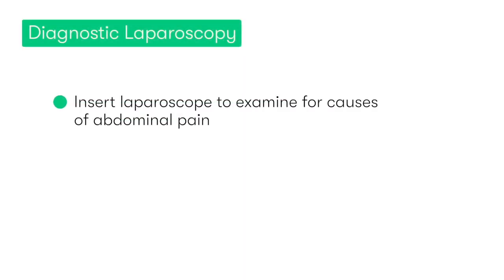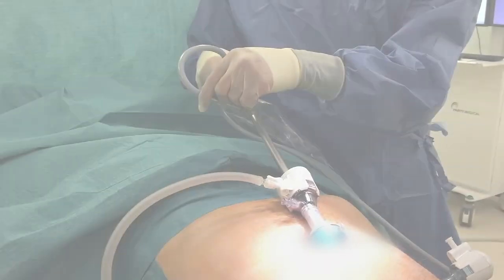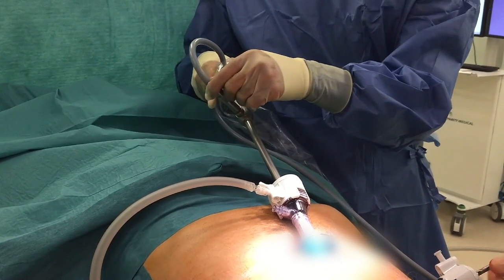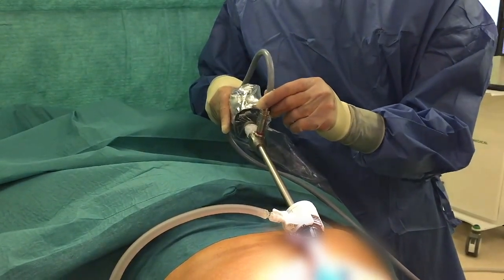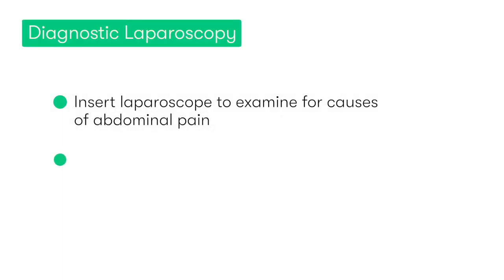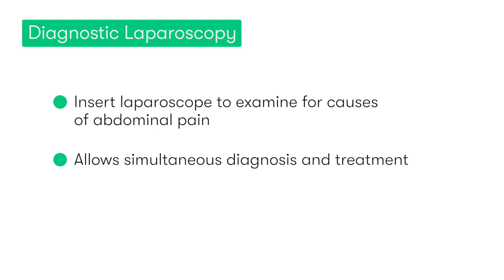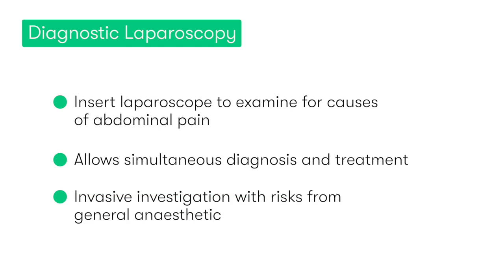Diagnostic laparoscopy is essentially when we insert a laparoscope into the patient's abdomen to find out what's going on. This can be advantageous as it allows us to make the diagnosis and, where applicable, treat the problem — for example by removing the appendix. However, it is a procedure that requires a general anaesthetic, so it's not without its risks, albeit very small ones.